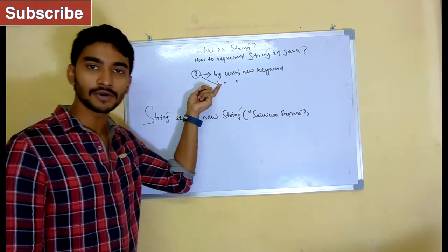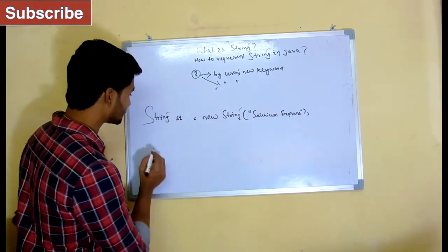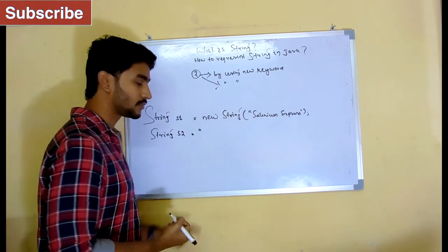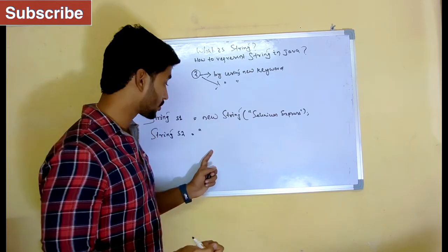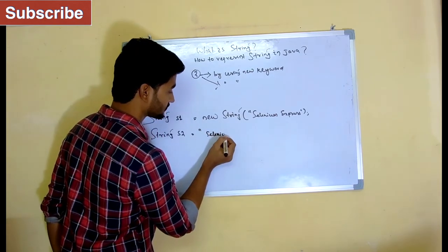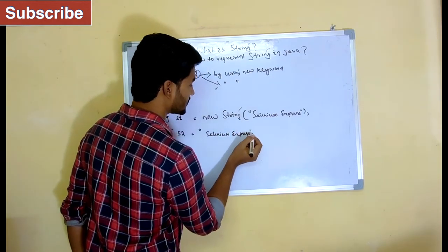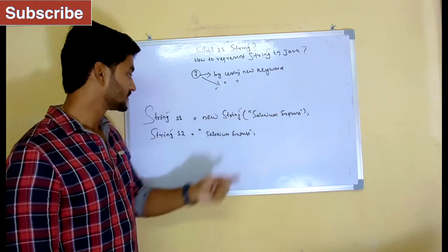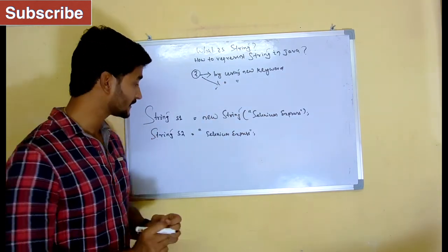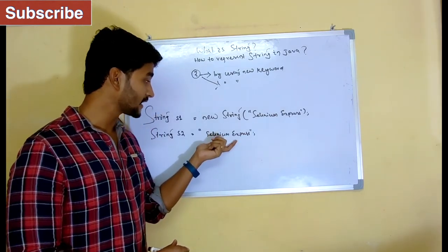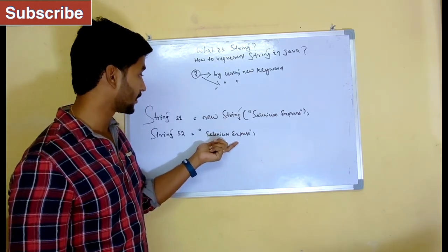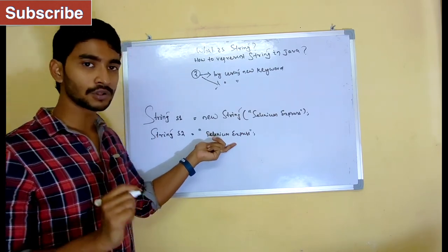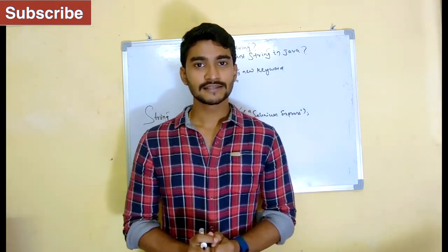The next way is by using double quotes. To do that, I write: String s2 = "Selenium Express". This is another way to create a string in Java. So we have two different ways: by using the new keyword and by using double quotes. Never feel that double quotes is just a shortcut way — there are very, very huge differences between creating an object using the new keyword and using double quotes. I'm going to cover all these things in upcoming tutorials, so keep watching.